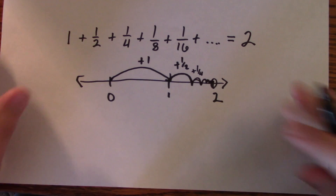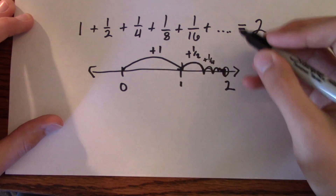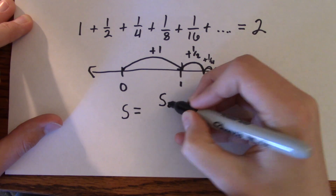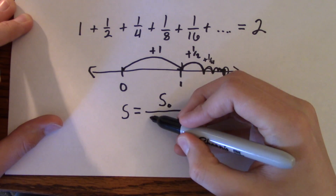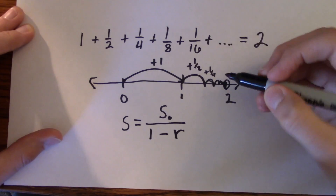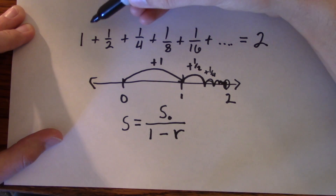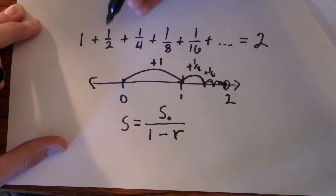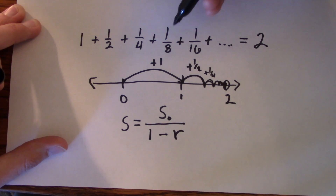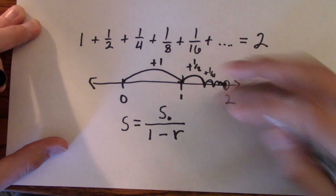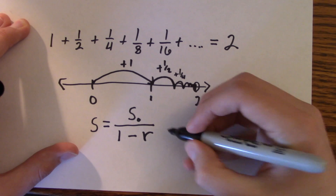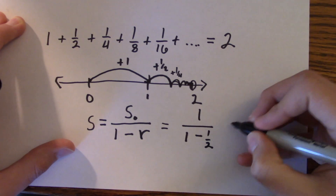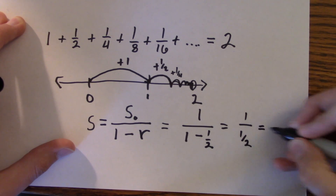Another way to get this result is by using a formula. The sum equals the first term — we call that s sub 0, in this case it's 1 — divided by 1 minus the rate r. The rate is whatever each next number is being multiplied by. Here every new number is the previous number multiplied by a half. So r is a half, giving us 1 over 1 minus a half, which is 1 over one-half, which is just 2.